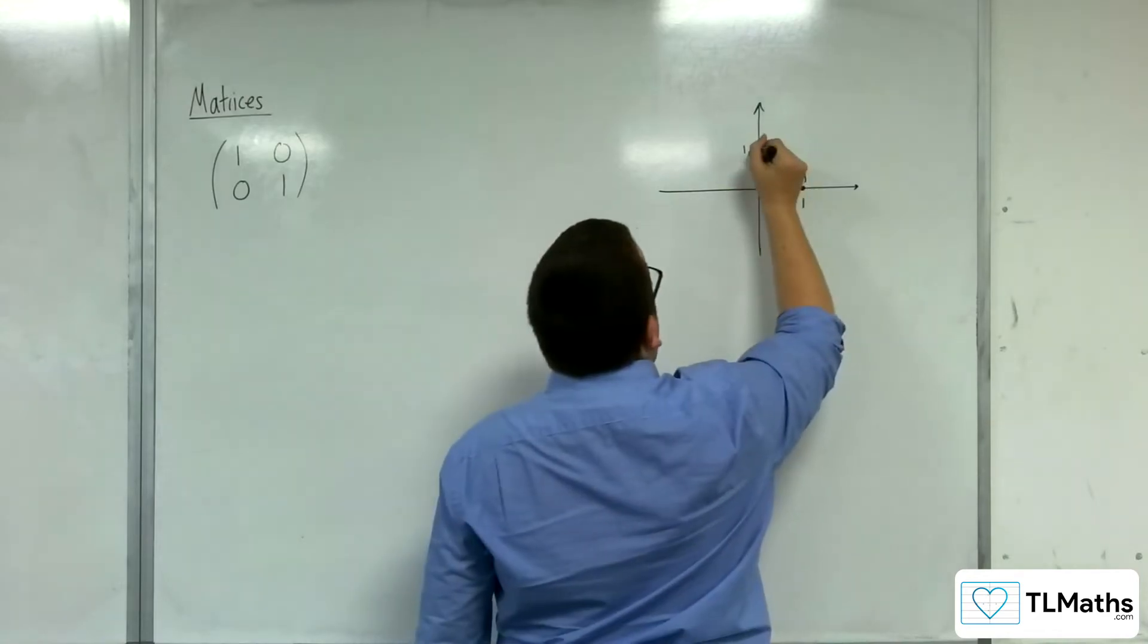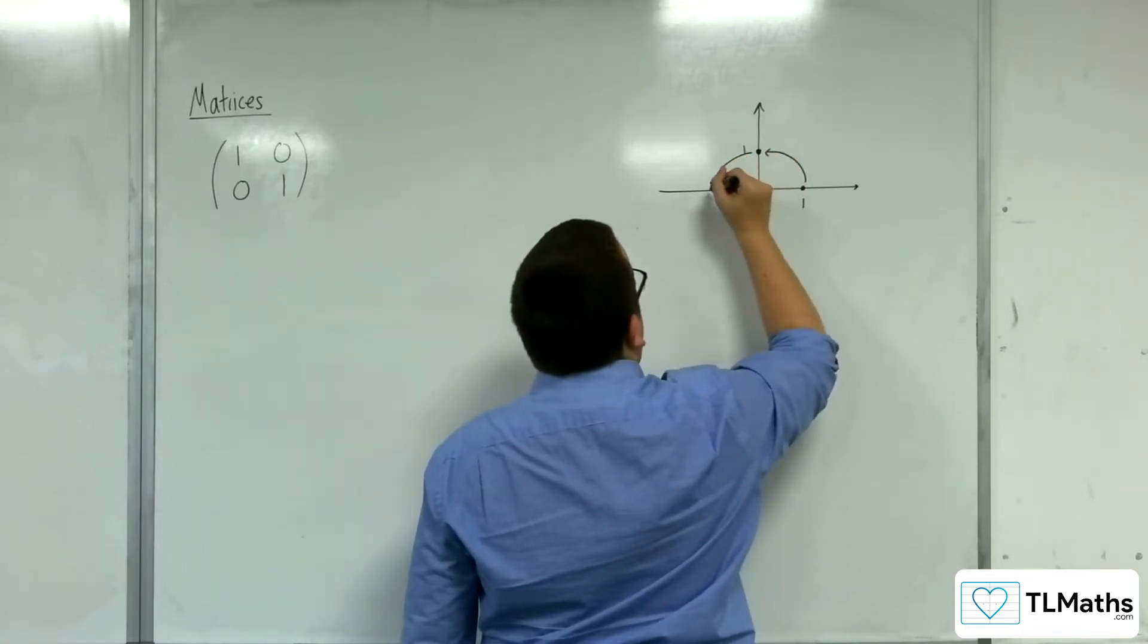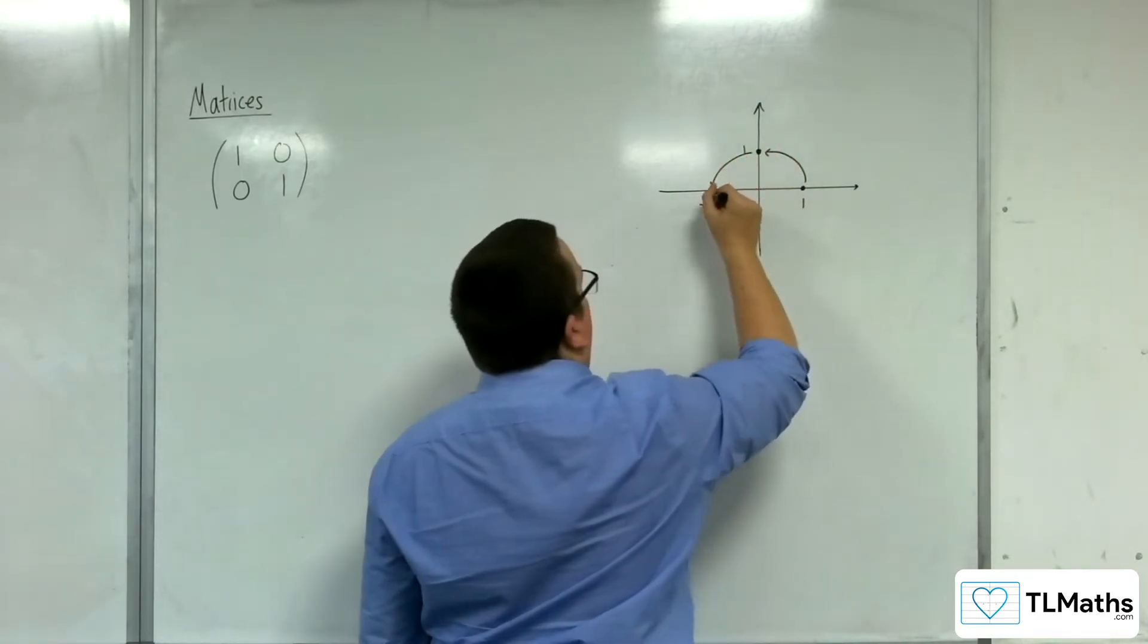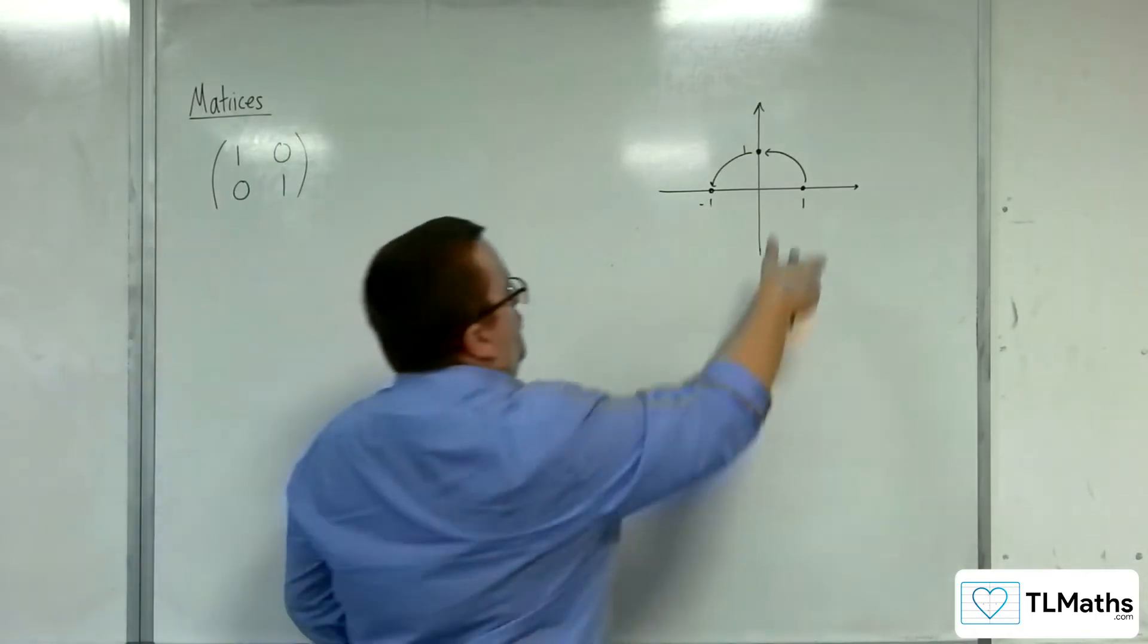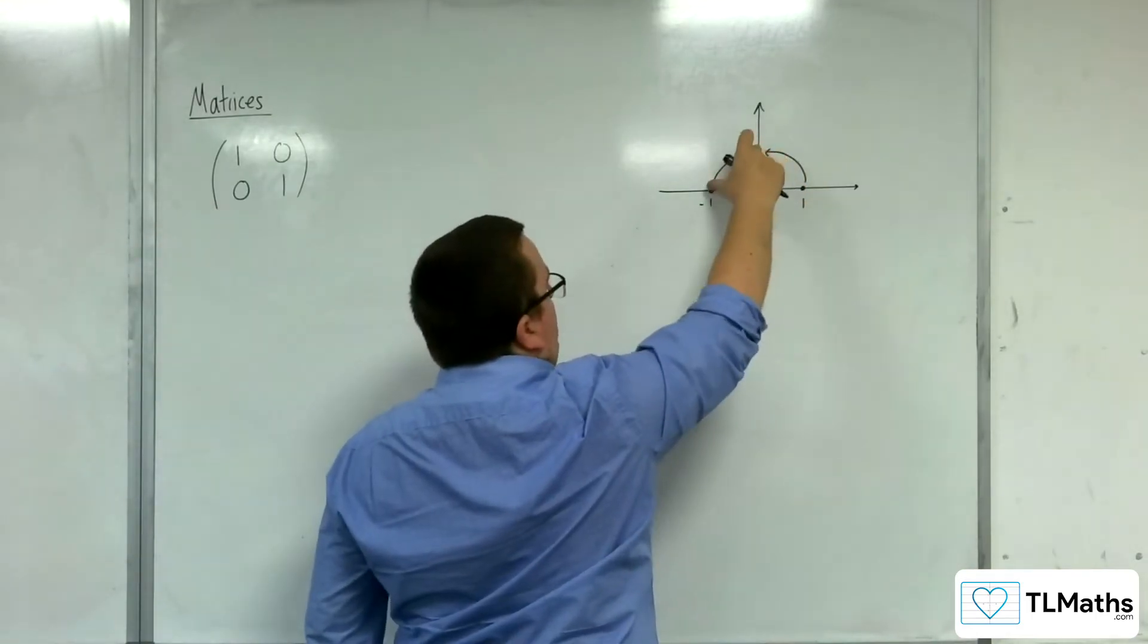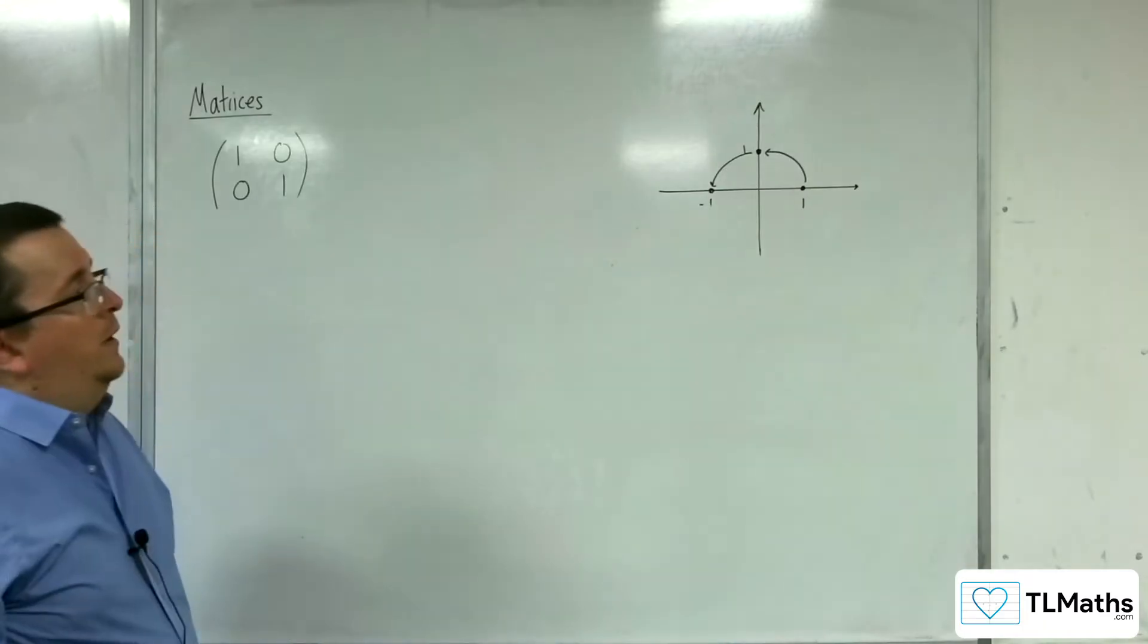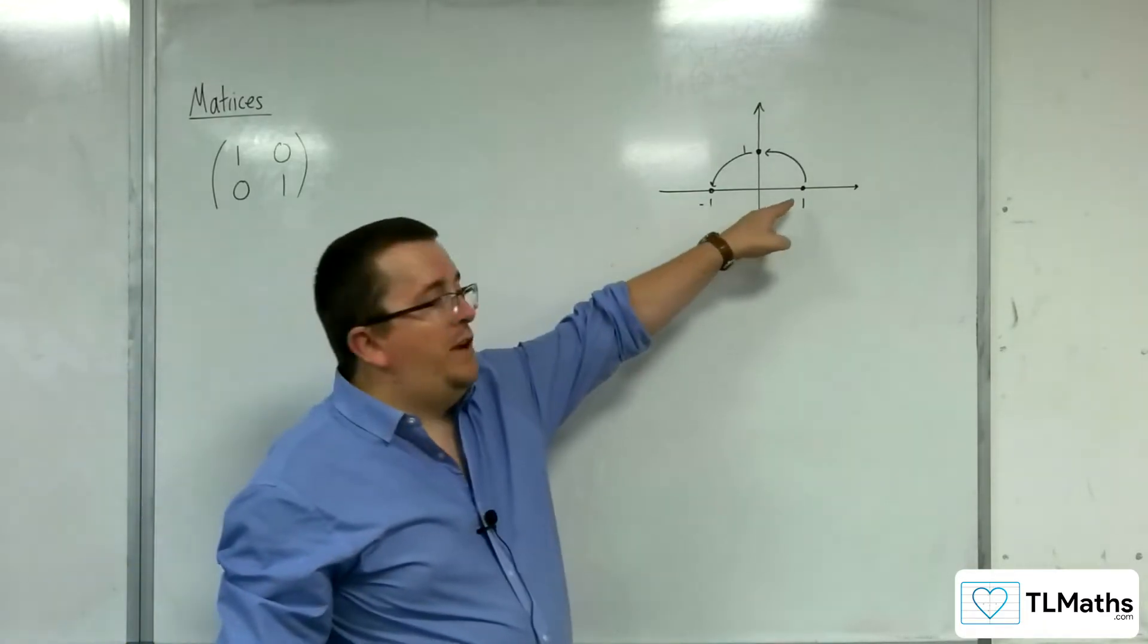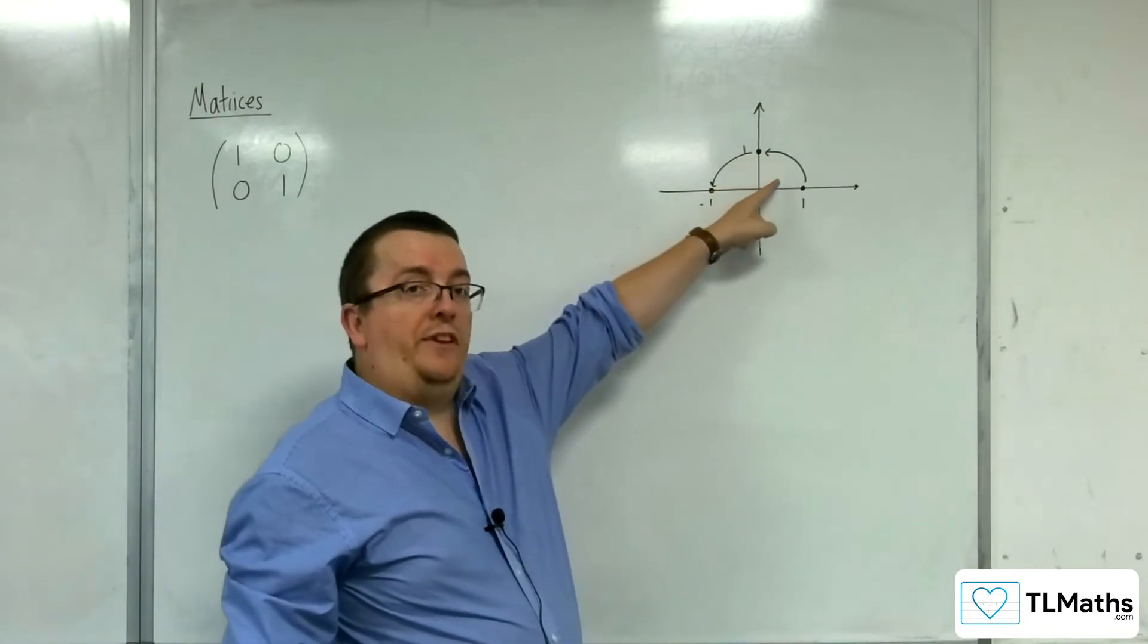And 0, 1 would be mapped onto this point here. So from those two points round to these two points. So the point that was at 1, 0 would now be at 0, 1.